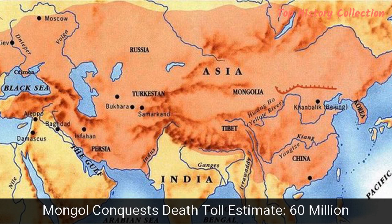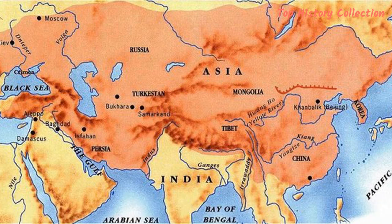Number 4: Mongol Conquest – Death Toll Estimate: 60 Million. If there is one man who could be said to have more blood on his hands than anyone else in history, it is Genghis Khan. Under the leadership of Khan and his successors, the Mongol Empire grew into the largest land empire the world has ever seen. At its peak covering 16% of the earth, the Mongol army swept across Asia, killing its rivals with great ferocity for the best part of two centuries.